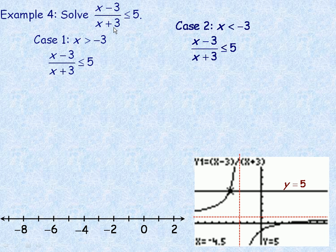We'll take a look at two cases here: when x is greater than negative 3, and when x is less than negative 3 — so on either side of that vertical asymptote at negative 3.